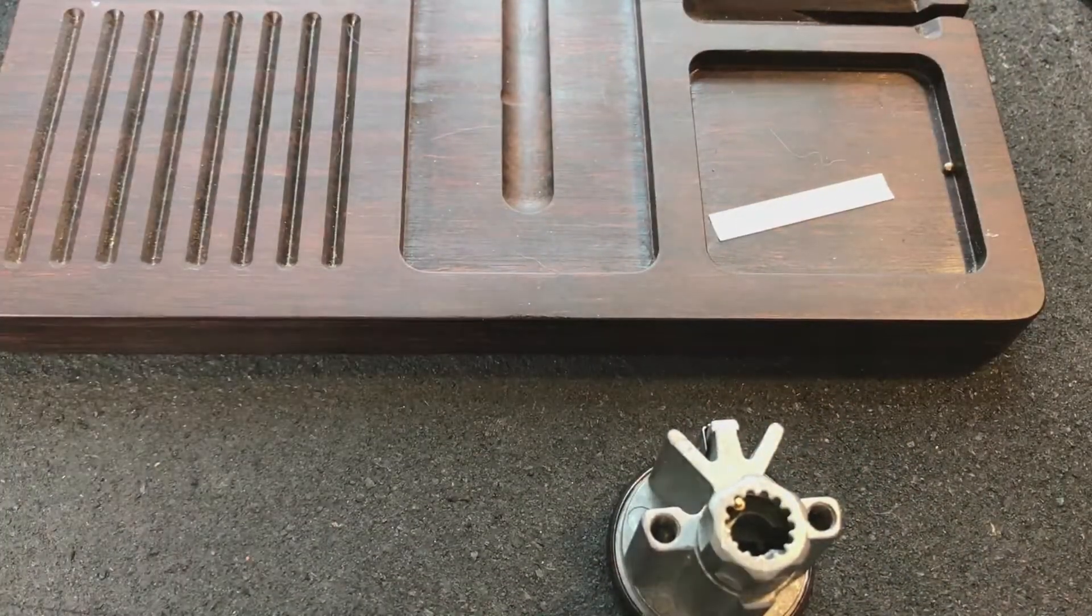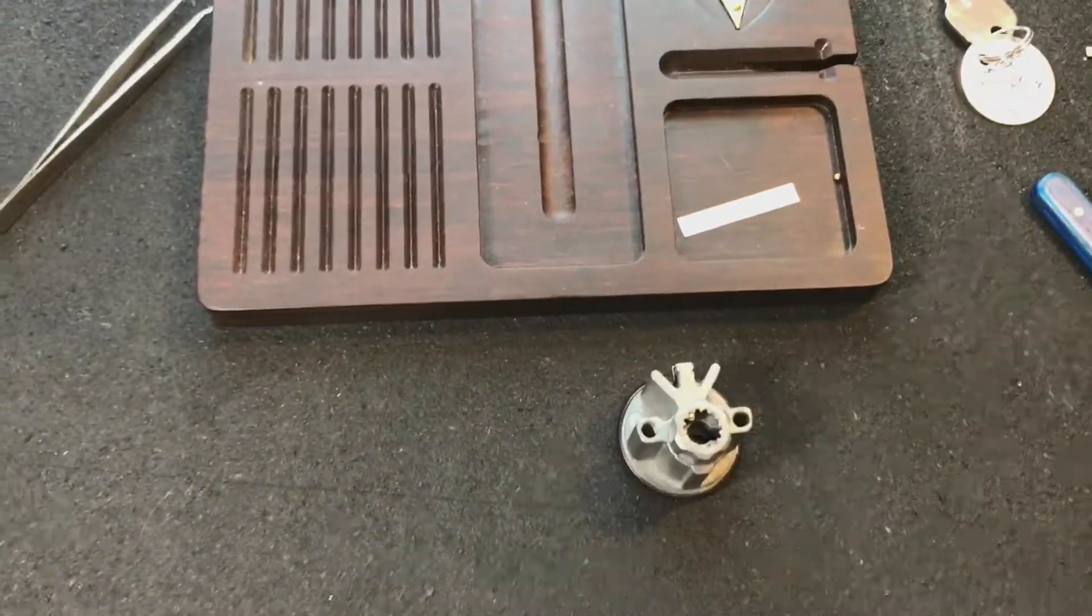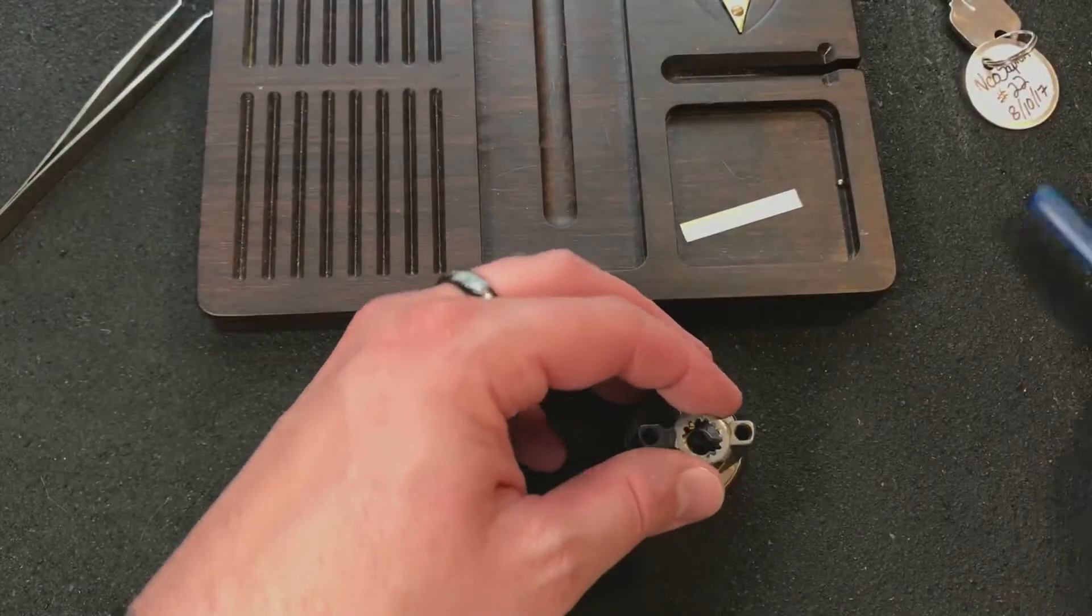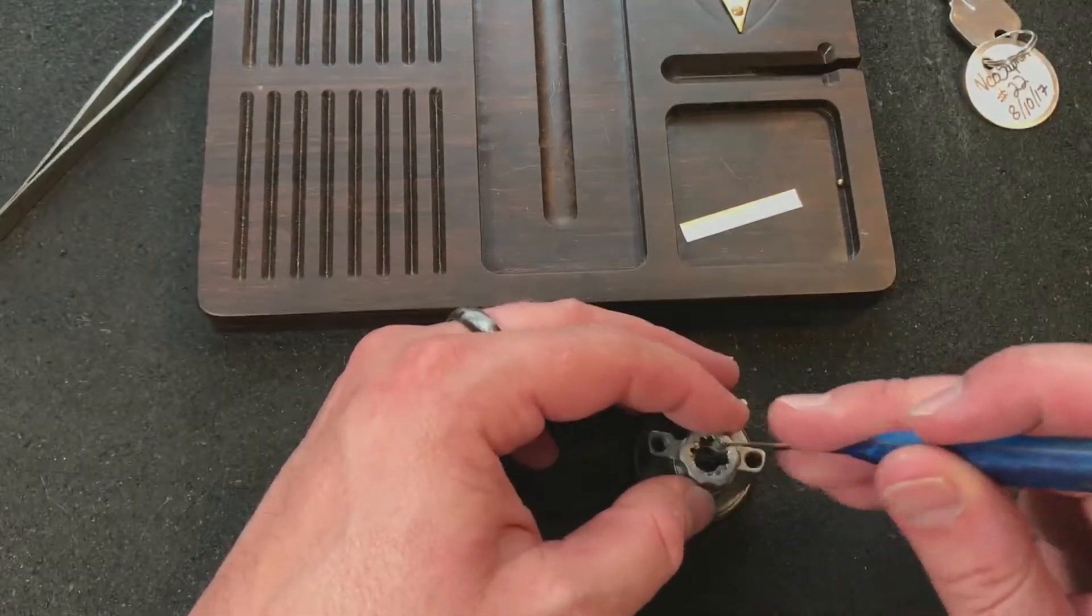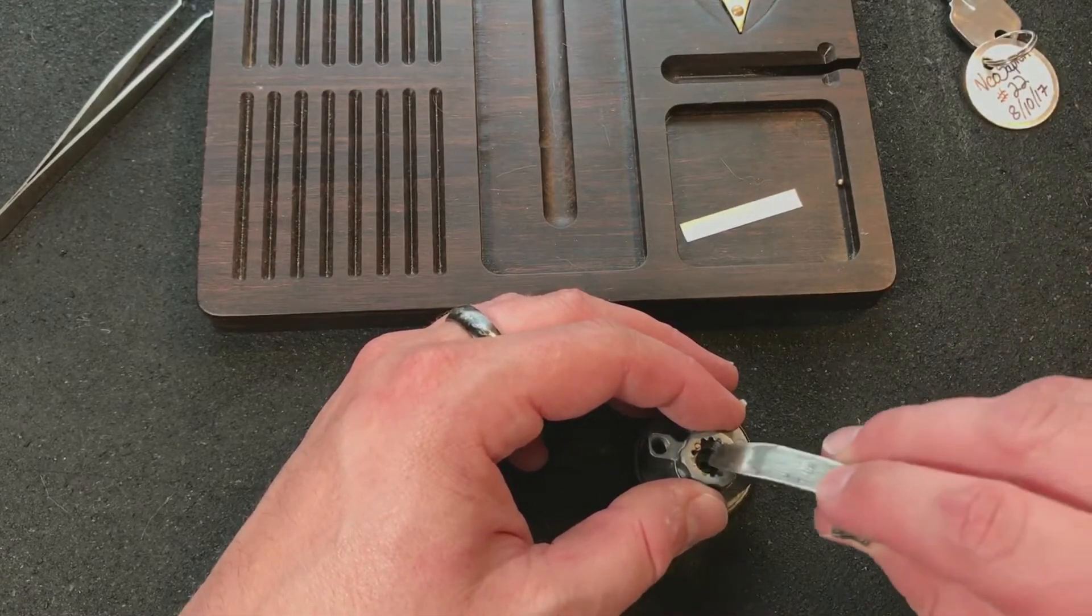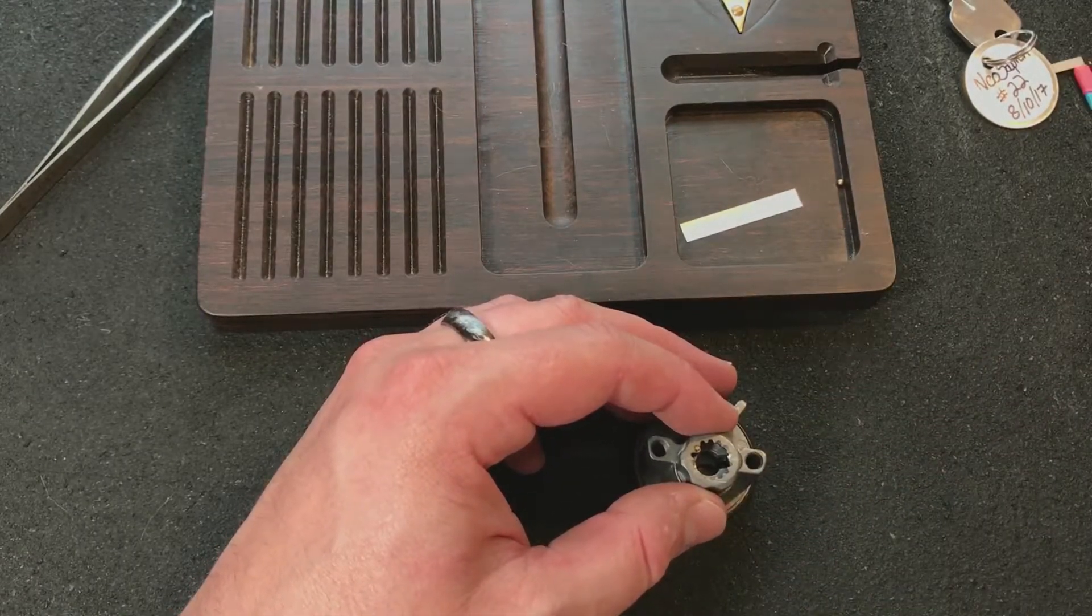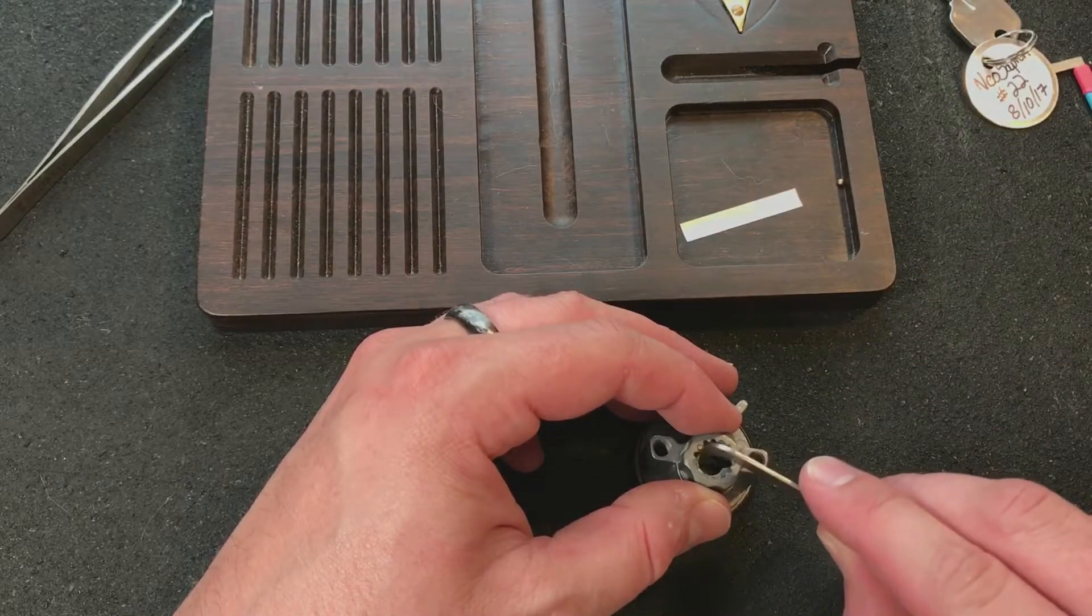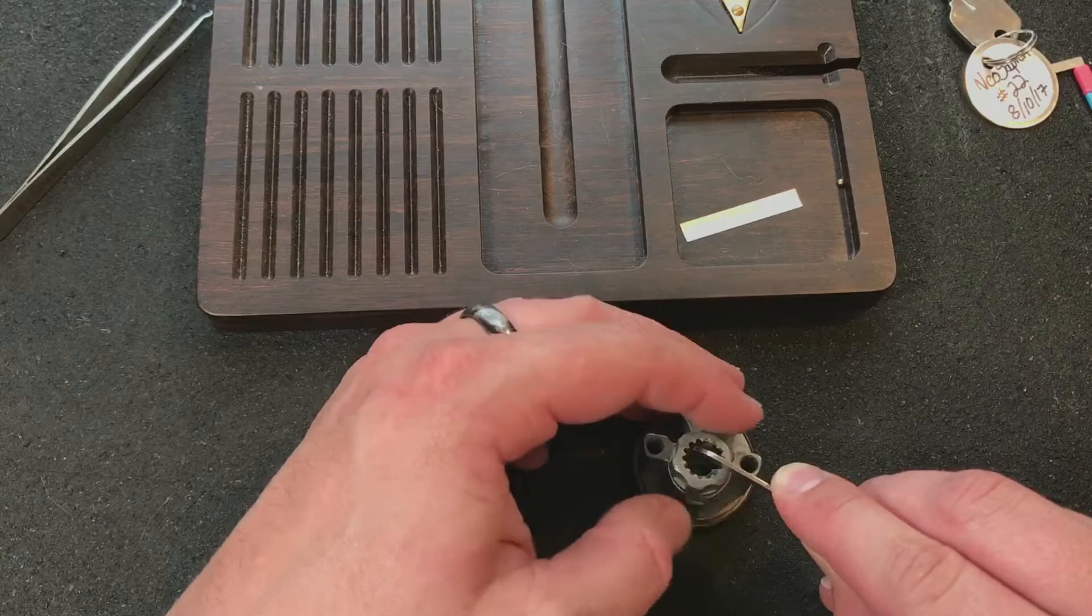So let's go ahead and get this thing disassembled. Again, I don't remember exactly what's inside of here so we'll just open it up and see. All right, first thing we'll do is get this little cap off the back of it. Let me use the pry bar just to hold it down with. There we go.